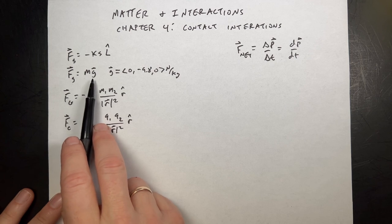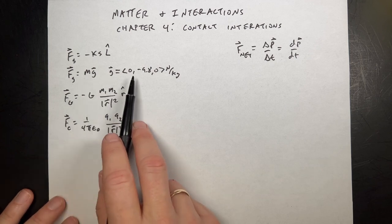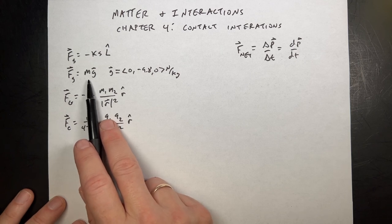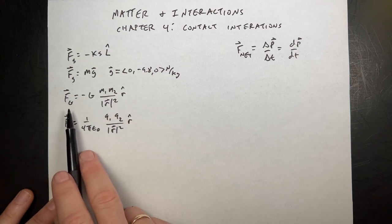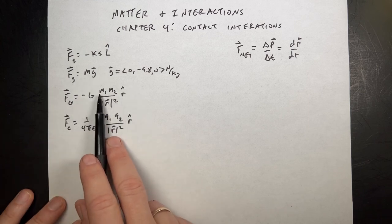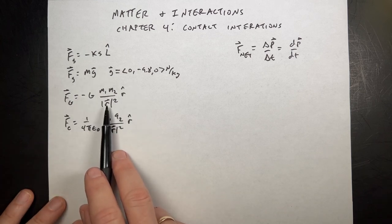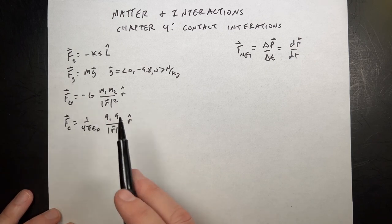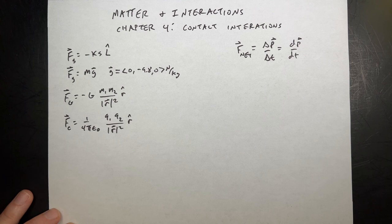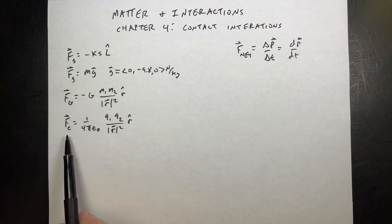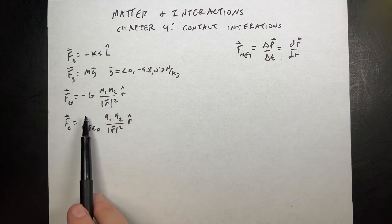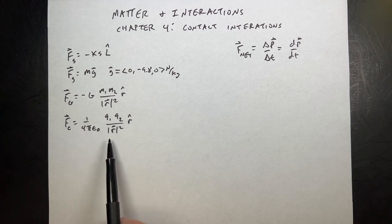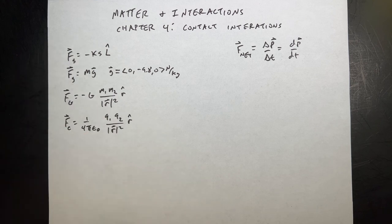This is the gravitational force near the surface of the Earth. We have the mass of the object. G is the local gravitational field. If I know the mass, I can calculate the force. This is the better gravitational force between two objects — mass 1, mass 2. R is a vector from one object to the other. And finally, we have the Coulomb force, with constant 1 over 4π epsilon-naught, the product of the charges, and the distance between them. You can calculate all these things.